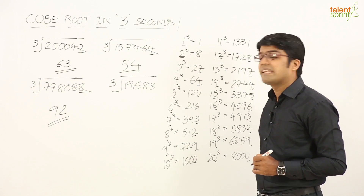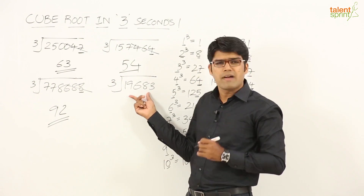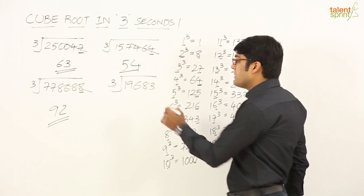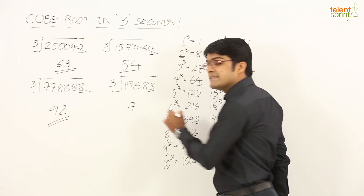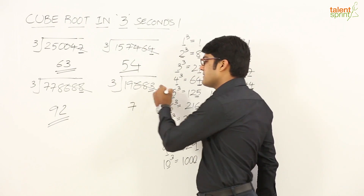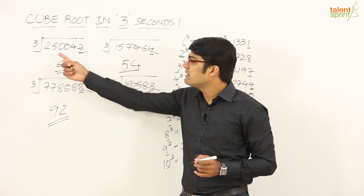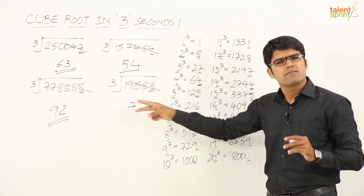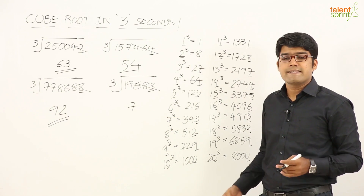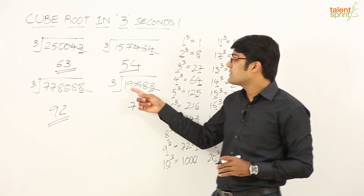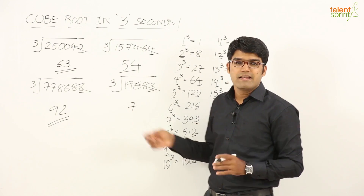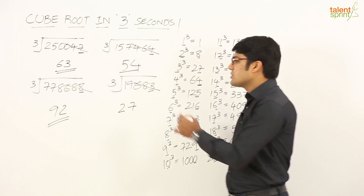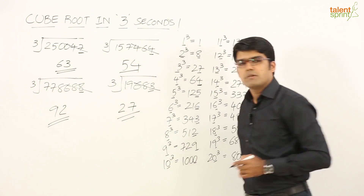Look at the last one: 19683. This is a 5-digit number, but the procedure remains exactly the same. The number ends in 3, so the cube root should end in 7. Leave the last 3 digits — we're left with 19, a 2-digit number this time. The highest perfect cube less than 19 is 8, and the cube root of 8 is 2. So the answer for this last one is 27.